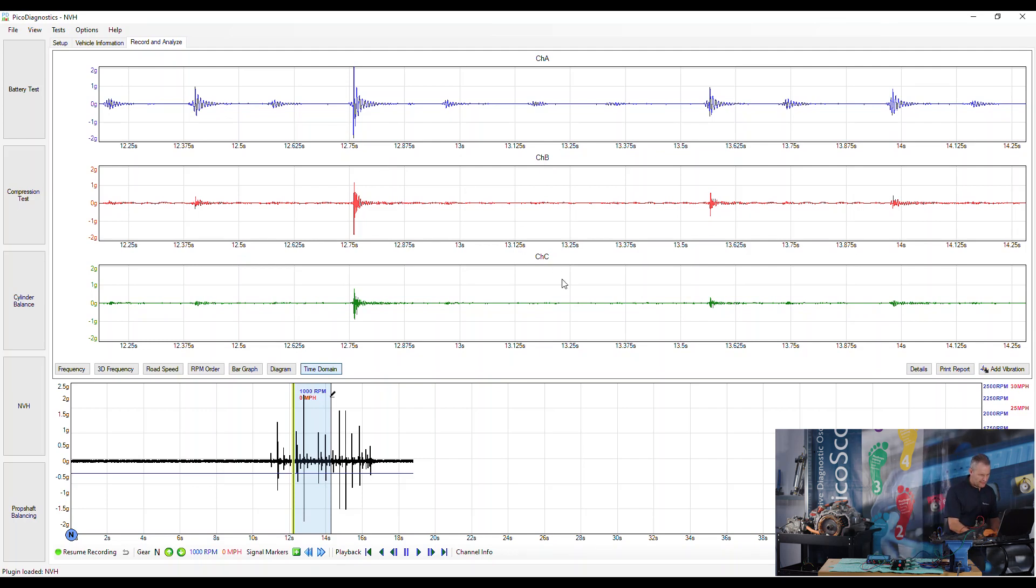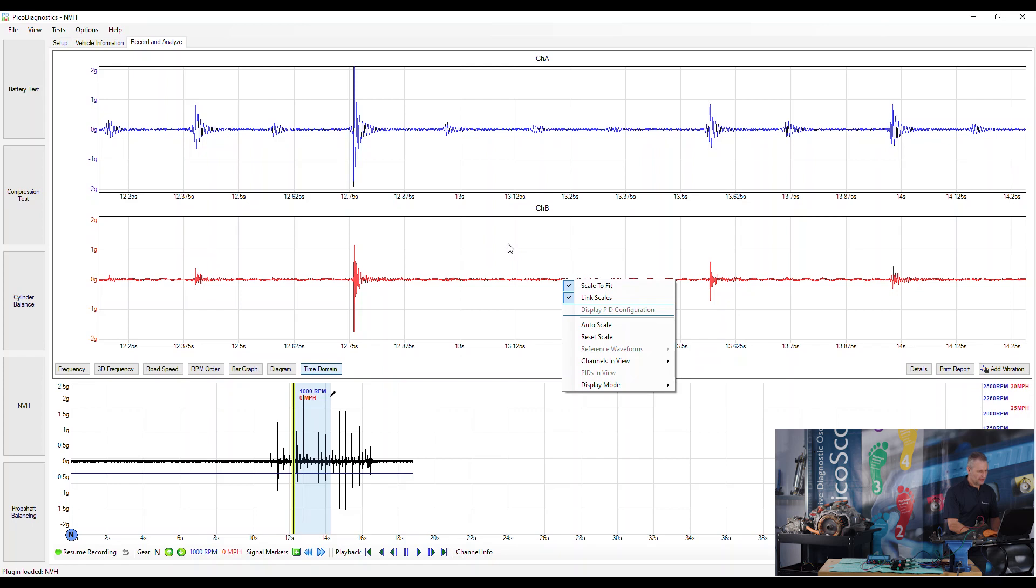We can hide a channel just to see. We'll take away channel C which is green. If we look at channel A at 12.7 seconds, we are plus or minus 2G. Channel B does almost achieve minus 2G, but nevertheless it's safe to say amplitude-wise channel A is closer to the source.